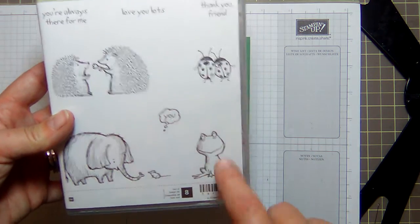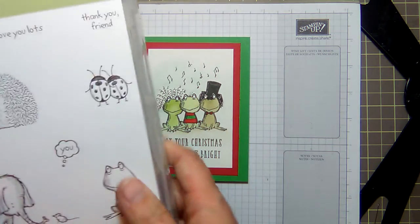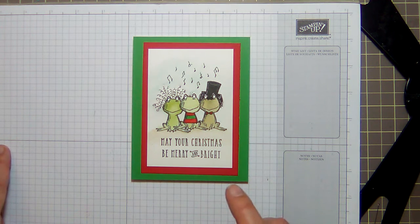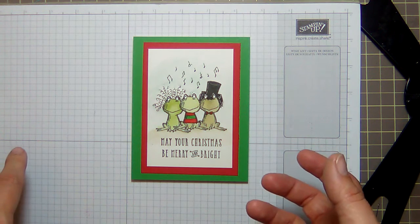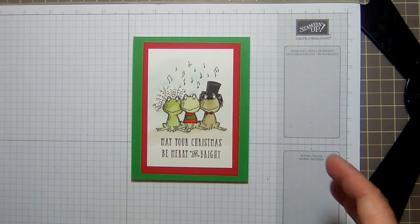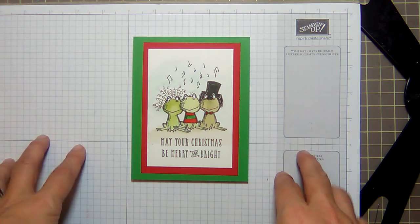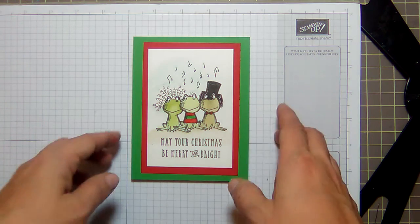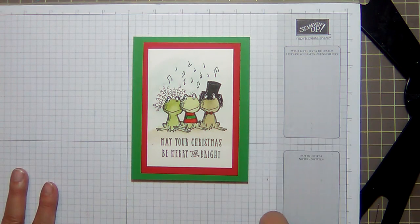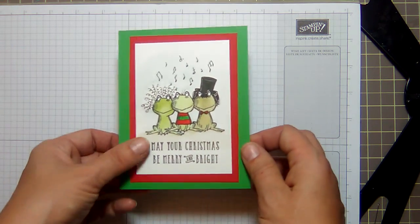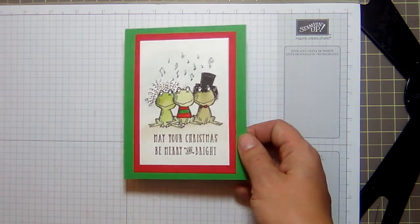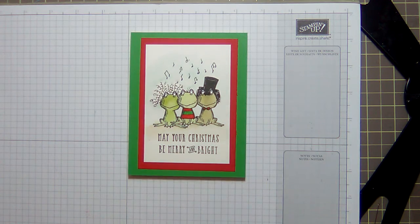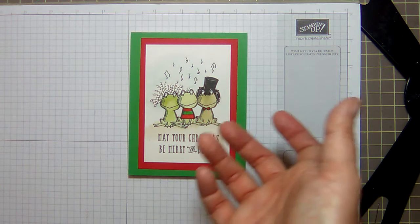This frog stole my heart. I love him. I love you lots on this one frog, he's absolutely stinking adorable. I saw a card like this on Pinterest from a lady who posted it in German, so I didn't understand any of it, but the frogs translate into any language. I cased her idea of the three frogs, the one with the crazy hair and the hat. I'm using the Love You Lots set and then the sentiment from Wonderful Year. May your Christmas be merry and bright just fit perfectly underneath of them.